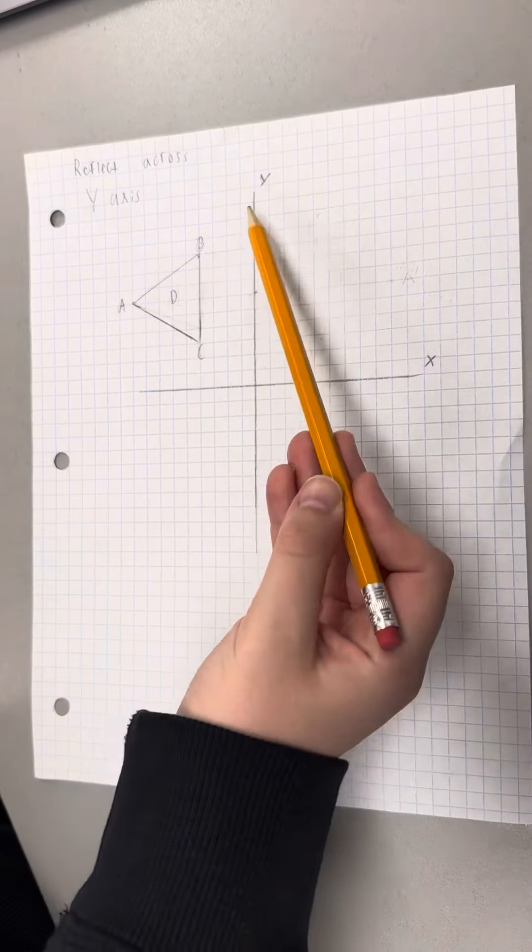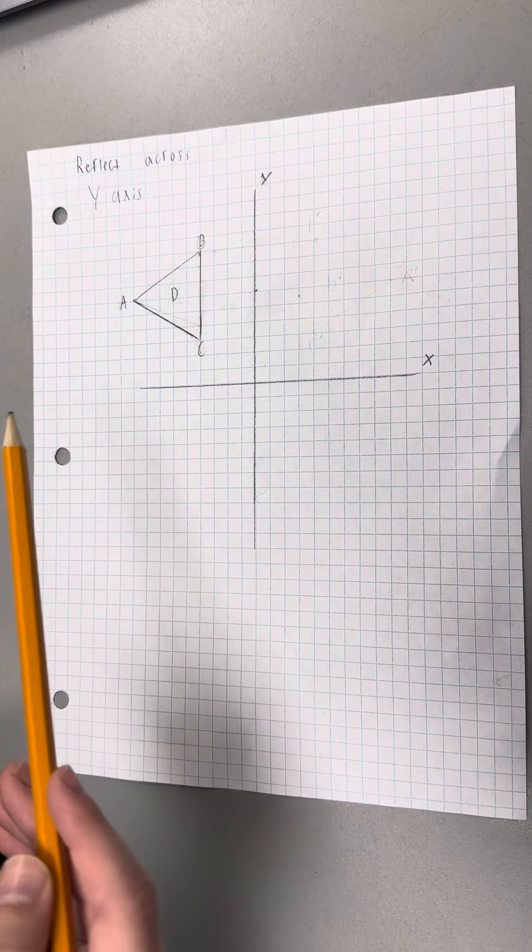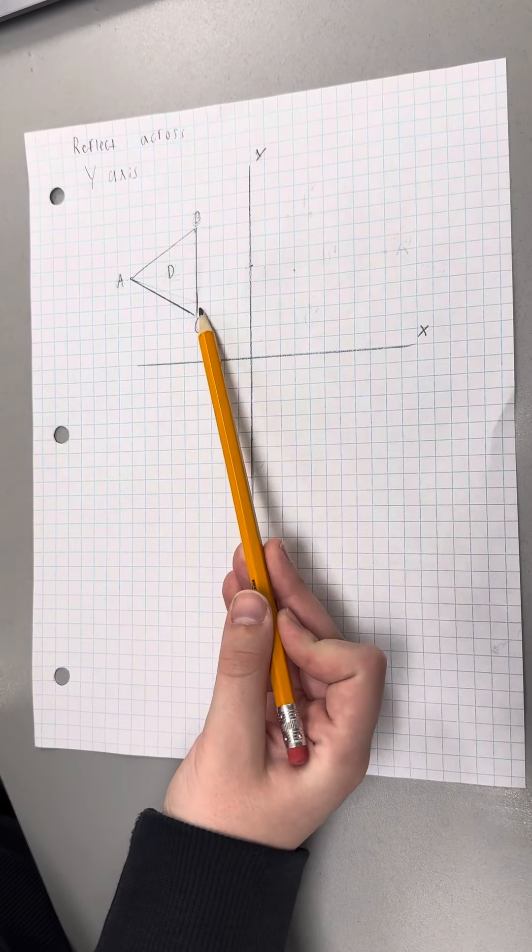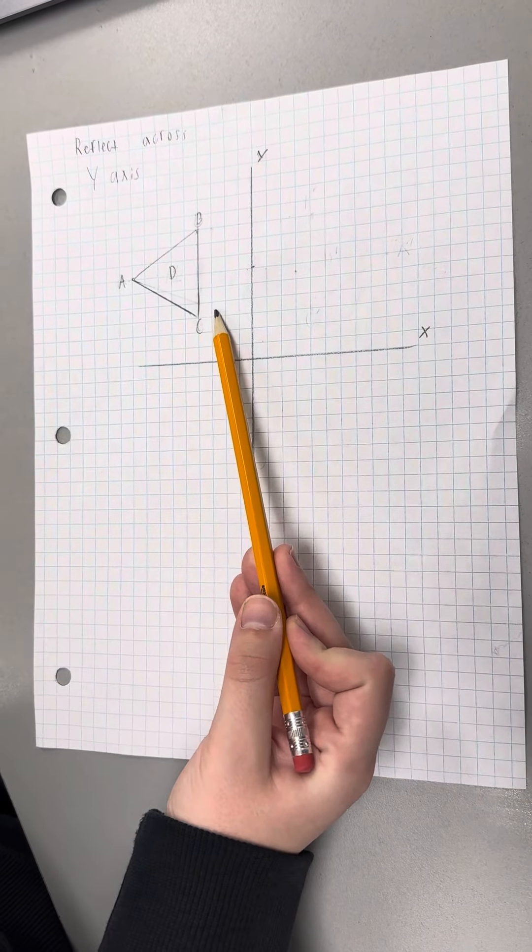So the first step is to look how far the closest point on the shape is to the y-axis. And as you can see, the closest point is one, two, three, four - four spaces away from the y-axis.